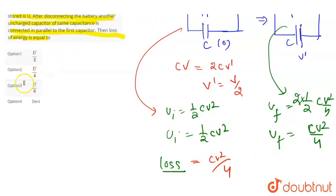If we see option selected here, then the option is U by 2, because your initial energy was half of CV square. So in form of U, it is U by 2. The right answer of the question is U by 2, option 1.